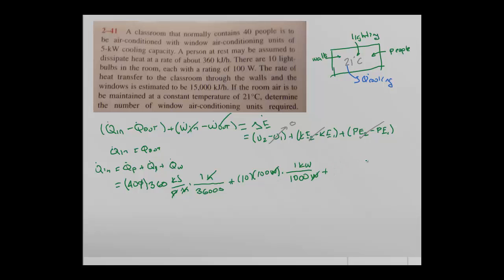Finally, we get the heat estimate through the walls and windows, which we have been told is 15,000 kJ per hour. Similar to before, one hour is 3600 seconds, giving us kilowatts. Adding all contributions together, we get 9.67 kilowatts total Q_in.